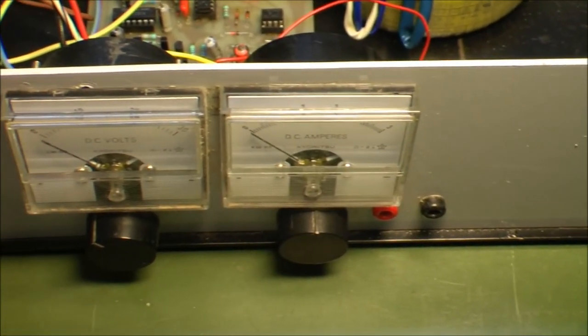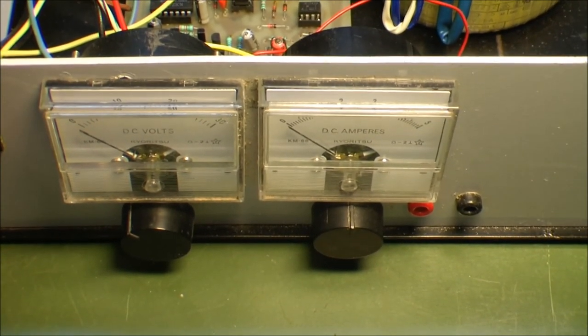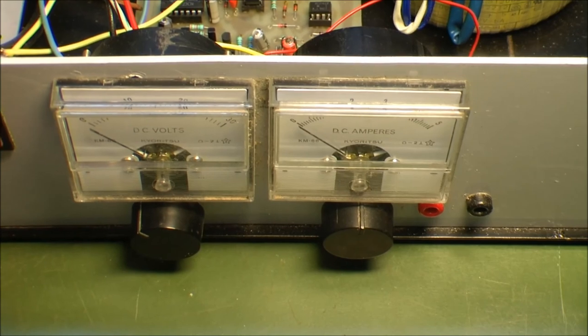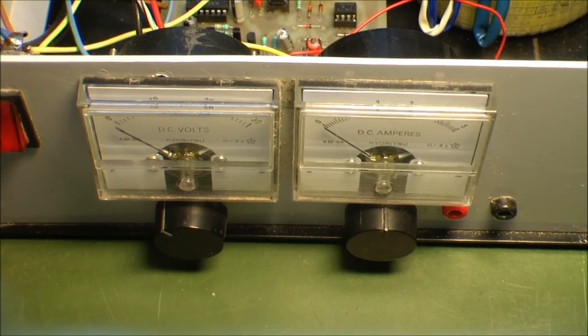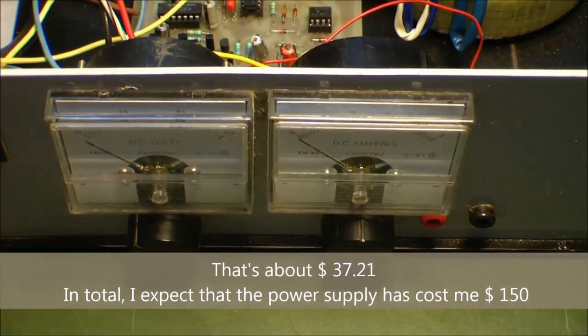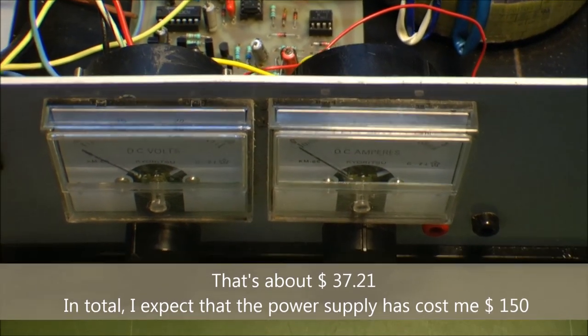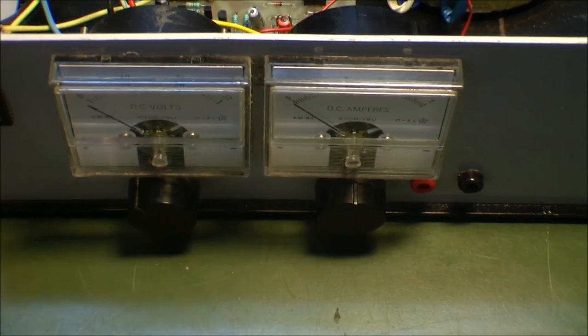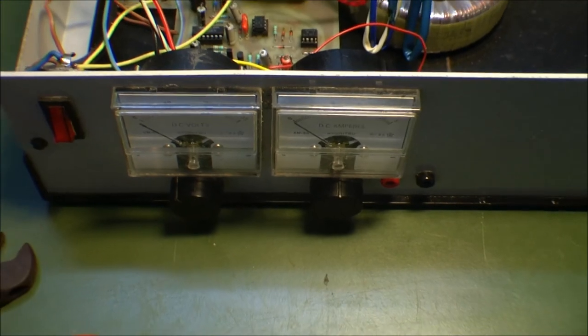And of course this big transformer and these nice meters on the front sides. And we had to pay some of the expensive things we had to pay for ourselves. And the case itself. I think this case was 200 kronors, which is approximately $35 for the case alone. But it's still a good power supply. I'm really happy with it.